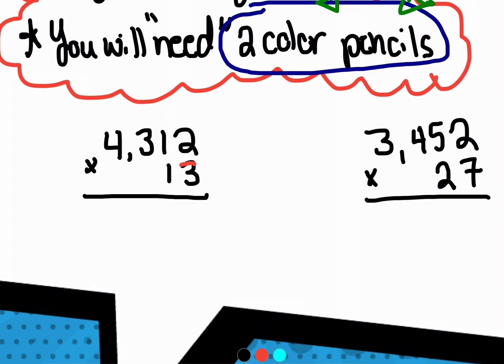So I'm going to choose my two colors. First one's going to be red. Multiply everything on the bottom of my red color by everything to the top. Three times two is six. Three times one is three. Three times three is nine. And three times four is 12. I'll put my comma.